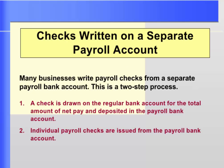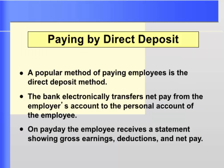Almost all businesses pay employee salaries and wages by check or direct deposit. The next journal entry records the actual disbursement of paychecks to employees. Some businesses set up a separate payroll account to further protect their cash account. Cash is credited for the net take-home pay. If a business uses a separate payroll checking account, a check is drawn on the regular bank account for the total net pay and deposited into the payroll bank account, from which individual payroll checks are issued. The bank can also electronically transfer net pay to the personal accounts of employees, who receive a statement showing earnings, deductions, net pay, and the date of deposit.